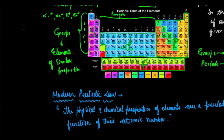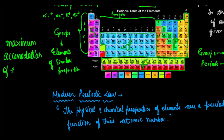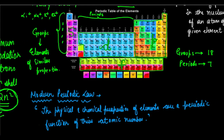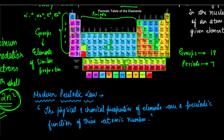One more thing to understand: each shell of an atom has an orbit number, and the maximum accommodation of electrons in the n-th shell is given by the 2n-squared rule — that is, 2 multiplied by the square of the orbit number. This is from class 9 structure of atom. The 2n-squared rule is used to determine position as well, so please remember this accommodation of electrons. With this, we are pretty much done with the discussion on the modern periodic table. In the next video, we will begin the variation of periodic properties in the periodic table. Thank you.